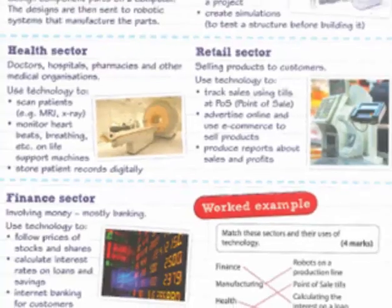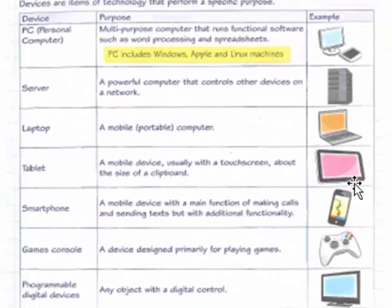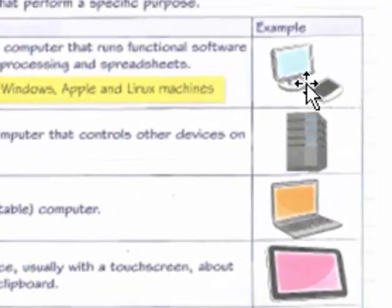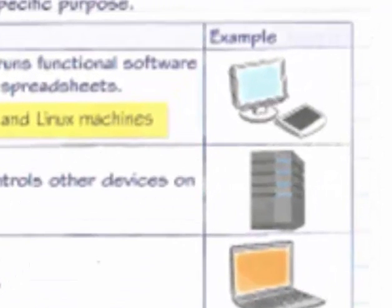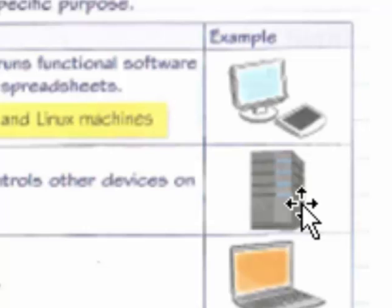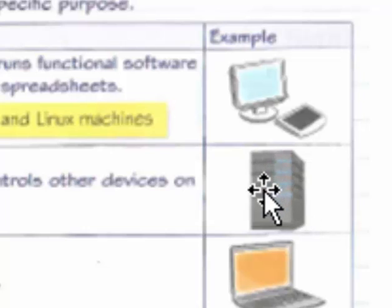Then you've learned about different types of computer systems. They're all called computer systems but for different purposes. The first one is the PC, personal computers. Then you have a server, which is a powerful computer which controls network resources. And you've got a laptop, which is similar to a PC but it's mobile. It's focused on mobility.